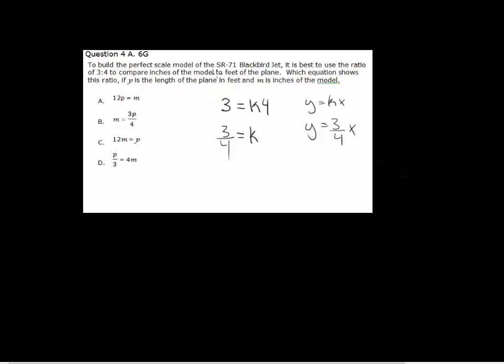So, 3 is with the model. And 4 is with the plane. Which makes y, m, and x, p. So that's m equals 3 fourths p. The other way to go about that one is to write the ratio. 3 fourths is equal to m over p. Because you've got to note that 3 goes with the model. And that 4 goes with the plane. And then, if you multiply both sides by p, these will cancel and will be left with 3 fourths p is equal to m.